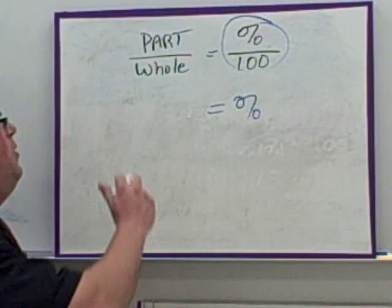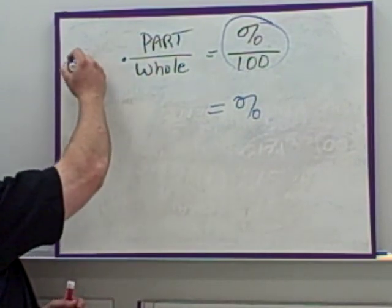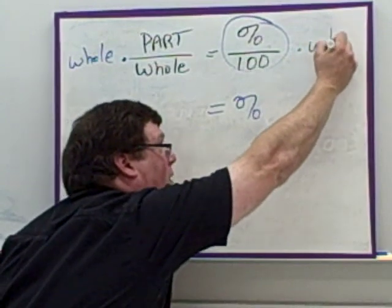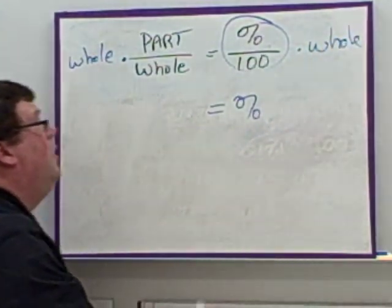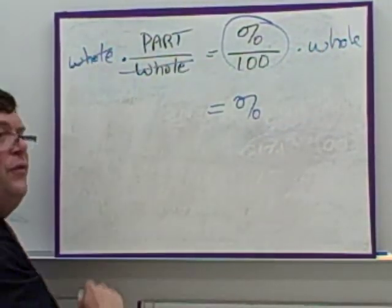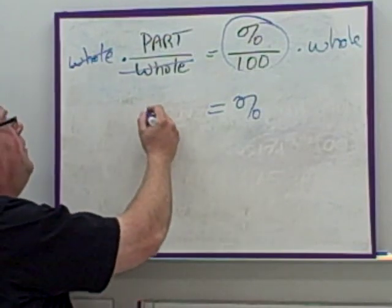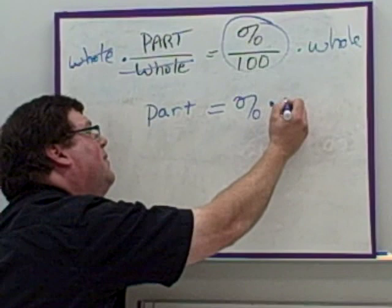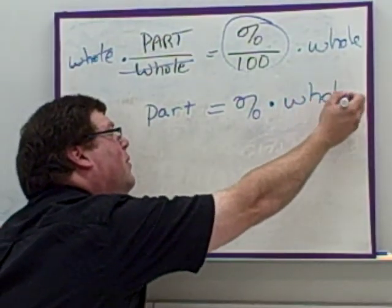I don't like to divide. Let's make it multiply instead. To do that, I'm going to multiply both sides of the formula by the whole. When I do that, the wholes will cancel out on this side, so you get part equals percent times the whole.